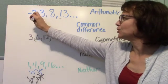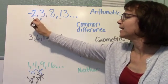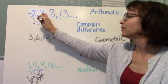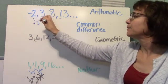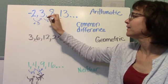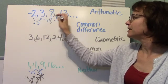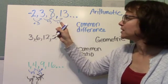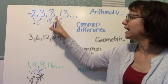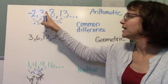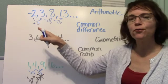So to go from negative 2 to 3, I add 5. From 3 to 8, I add 5, and from 8 to 13, I add 5. I can go backwards as well. 13 minus 8 is 5, 8 minus 3 is 5, 3 minus negative 2 is also 5.